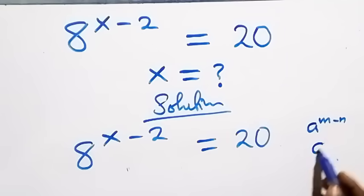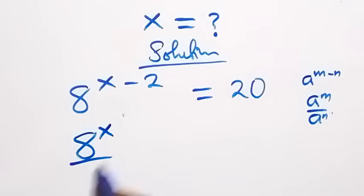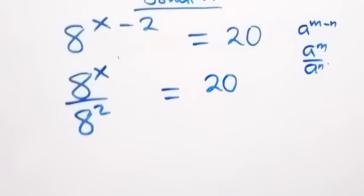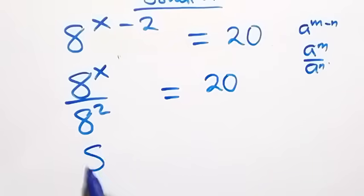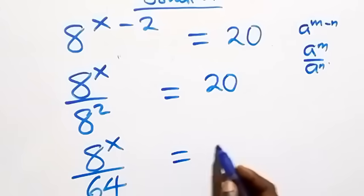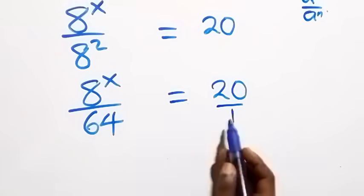This follows from the rule a raised to power n minus m, which can be written as a raised to power n over a raised to power m. So we have 8 raised to power x over 8 squared, equals 20. And 8 squared is 64, so this becomes 8 raised to power x over 64, equals 20.